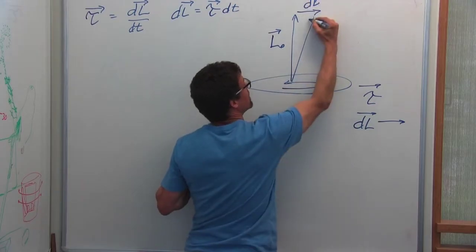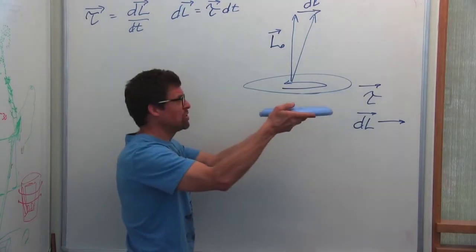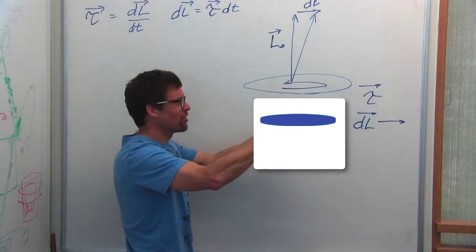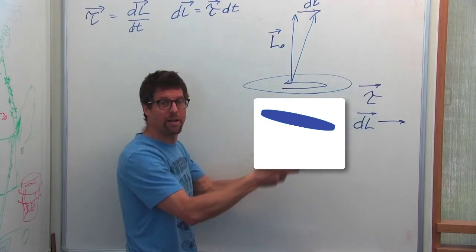And it will change orientation in a way that we don't really expect it to. So as I push the frisbee like this, it actually tips like this, and then remains stable again until another torque is put on it.